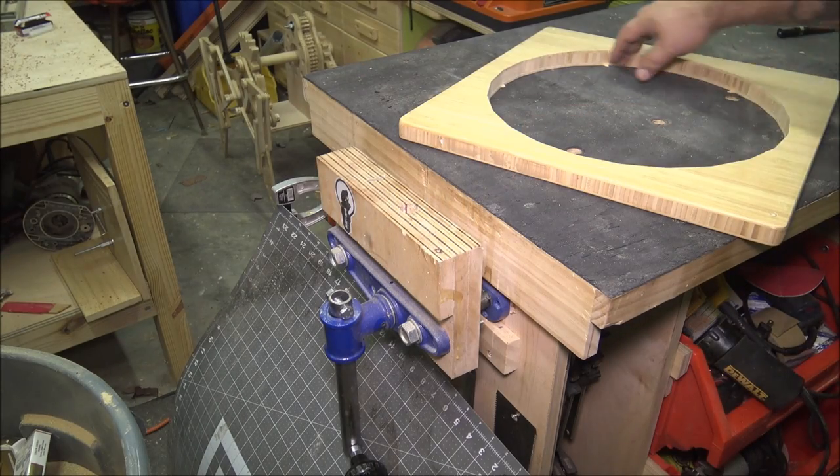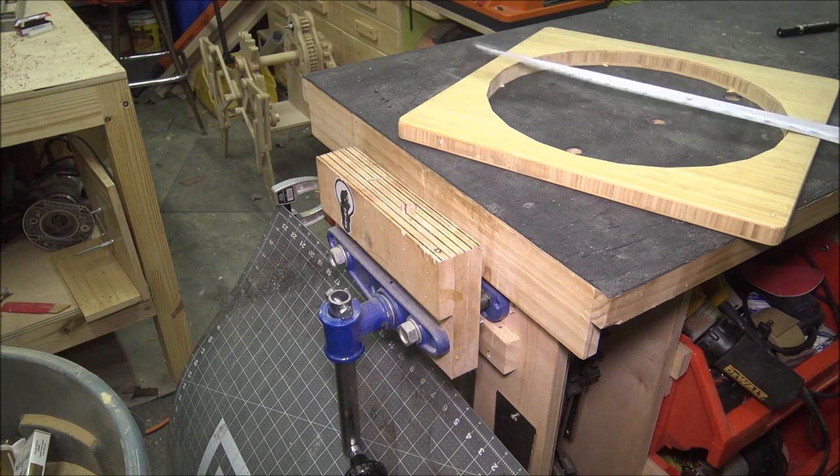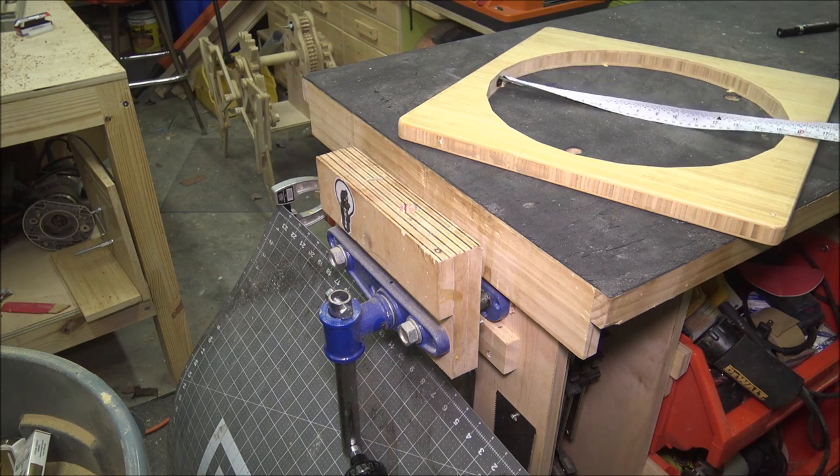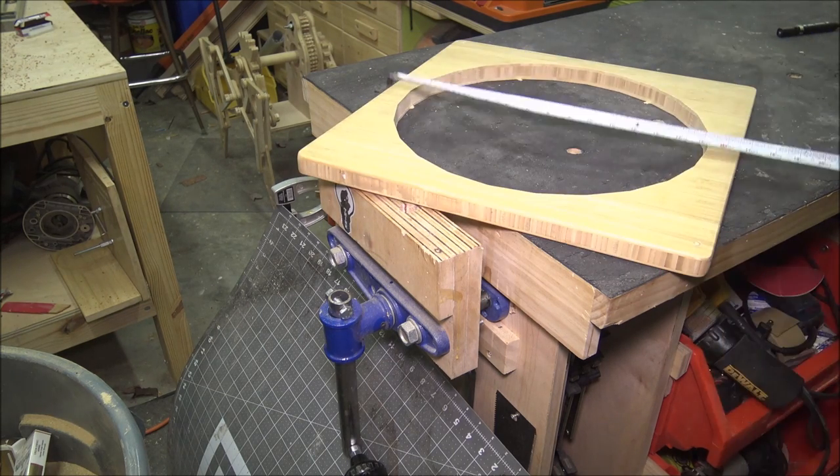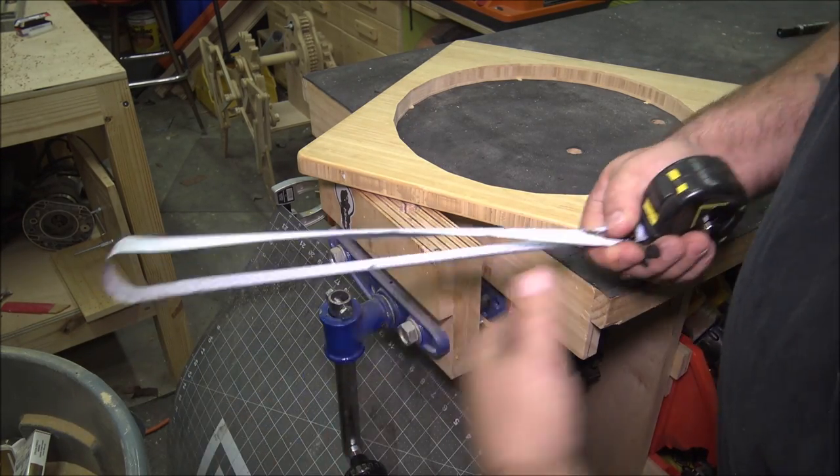If I need to find the circumference or the rough circumference of a circle, say I'm cutting edge banding to a certain length or whatever, all I'm going to do is measure the diameter of the circle, add one inch, fold my tape measure three times, and that says 49 inches.